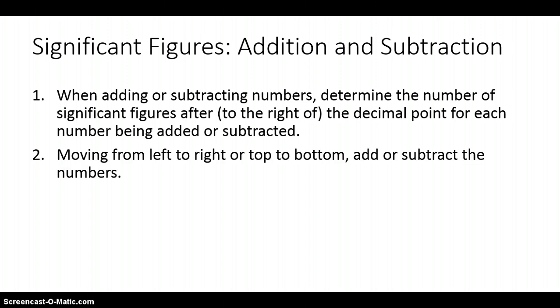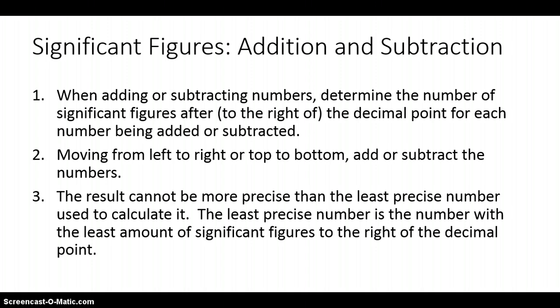After you've determined the number of significant figures after the decimal point, moving from left to right or top to bottom, you add or subtract those numbers. Third, look at the results — the results cannot be more precise than the least precise number used to calculate it. The least precise number is the number with the least amount of significant figures to the right of the decimal point.